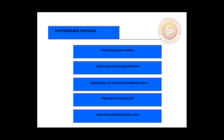Next is the software interrupt. We can generate the software interrupt by using a special instruction which is called as the software interrupt. There are 256 types of software interrupt, specified as INT n, where n is the number ranging from 0 to 255.